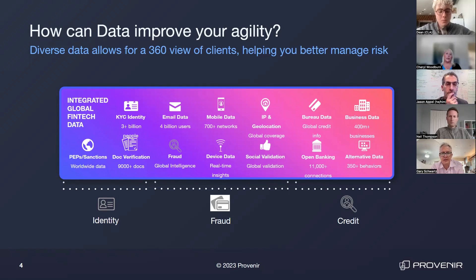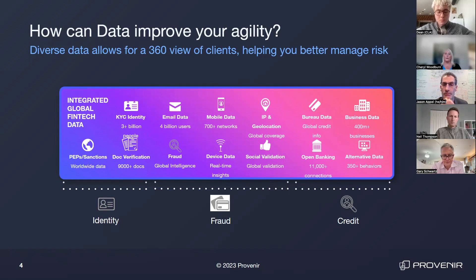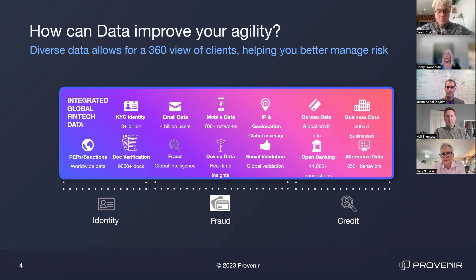When we consider data, we think about it in three broad buckets: identity — KYC, meeting your regulatory obligations, making sure you know who the person is, that they're not a bad person and that you should let them in the door; preventing fraud — closing the door as tight as possible while still leaving it open for good people; and of course assessing people's credit worthiness.